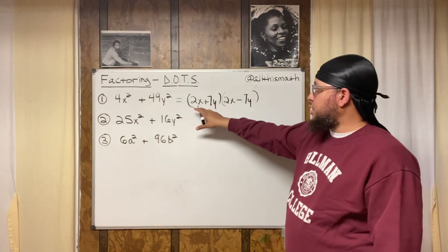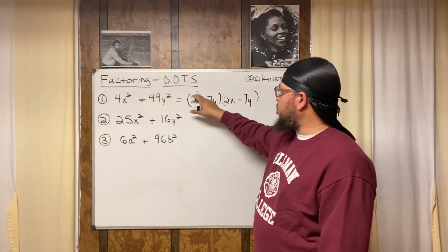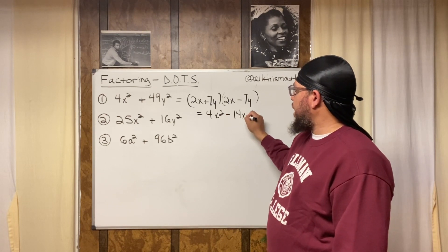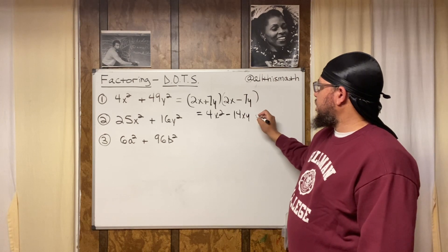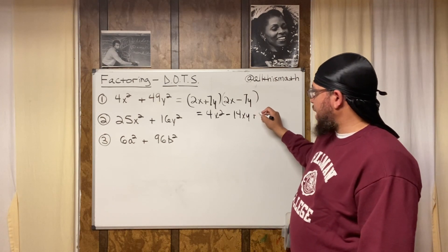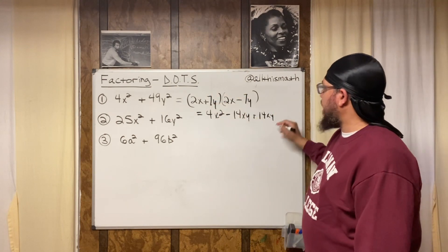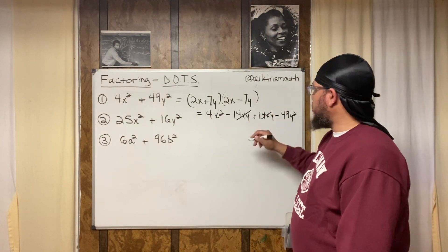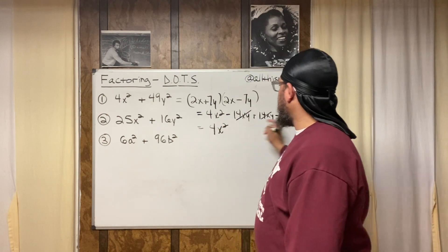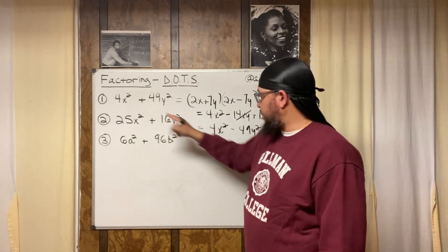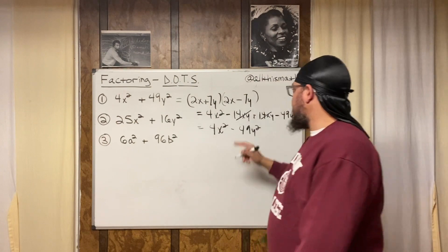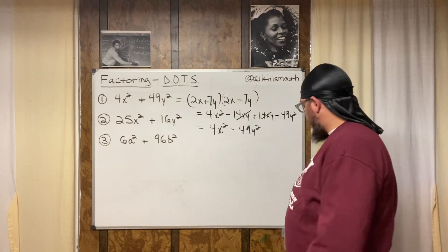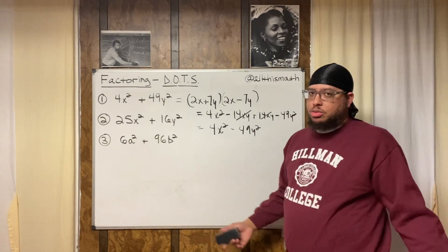Let me show you why this is incorrect. If you multiply it out using the FOIL method: 2x times 2x is 4x-squared, then 2x times negative 7y is negative 14xy, then 7y times 2x is positive 14xy, and 7y times negative 7y is negative 49y-squared. The 14xy terms cancel out, and you get 4x-squared minus 49y-squared — that's not the same thing as plus. That's the proof.